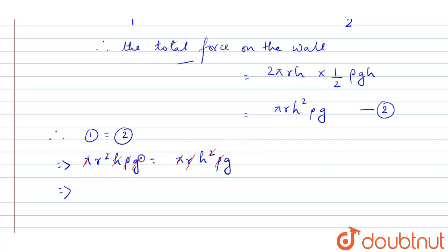ρ gets cancelled out, g gets cancelled out. So from the LHS it is r is left out, and from RHS h is left out. So radius equals height of the liquid, right?